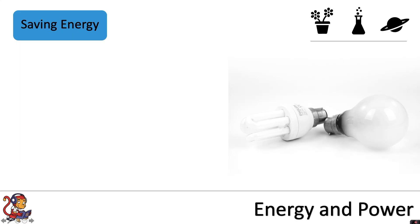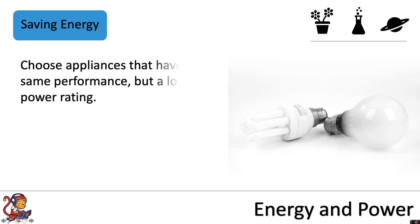So where possible, what you want to do is save energy. To do that, you would choose appliances that have the same performance but a lower power rating. Let's take these two light bulbs, for example. They will both give you the same performance in lighting up your room. However, this one here is an energy-saving light bulb because it runs at a much lower power than a standard light bulb.